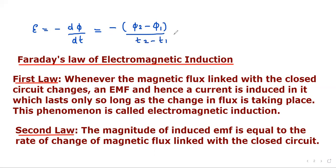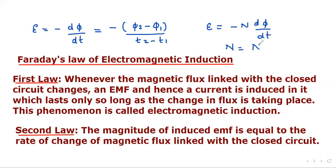If there are n turns which are closely bound, in that case, the EMF induced will be equal to −n dφ/dt, where n is the number of turns in the coil.